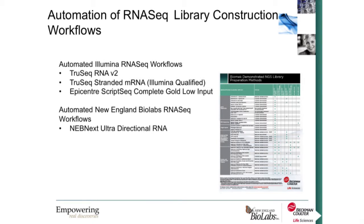We have a number of RNA-seq library construction workflows already automated on our various liquid handling platforms, including the TruSeq RNA version 2, the TruSeq Stranded mRNA, which is an Illumina-qualified method, and the Epicenter ScriptSeq Complete Gold low-input kit. We're also automating the NEBnext Ultra Directional RNA kit, which is what I'm going to be talking about today.